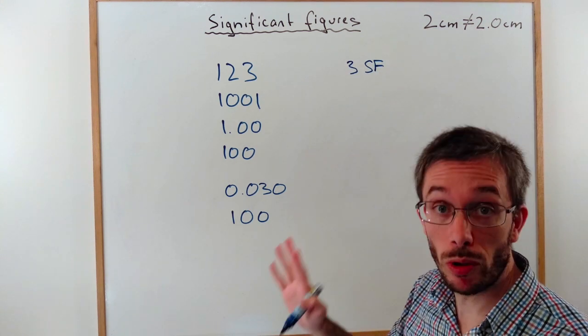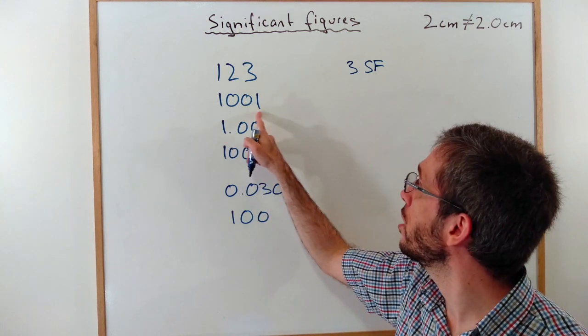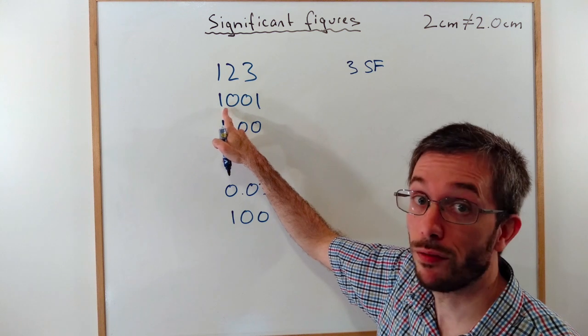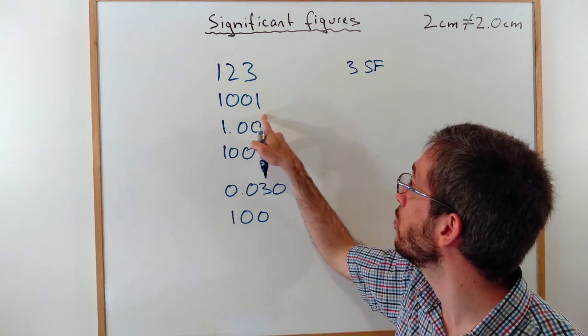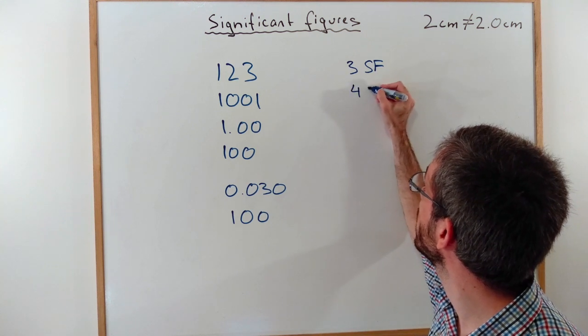Then zeros are a bit more complicated. Zeros do count if they are sandwiched in between other numbers. For example, if I have 1001, the 2 zeros here are sandwiched, so they count. So here I have 4 significant figures.